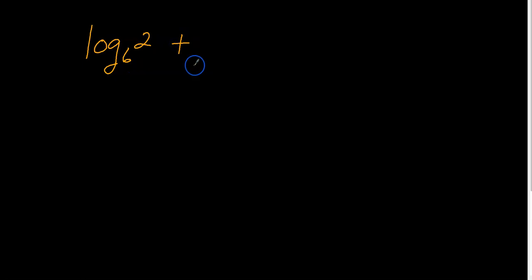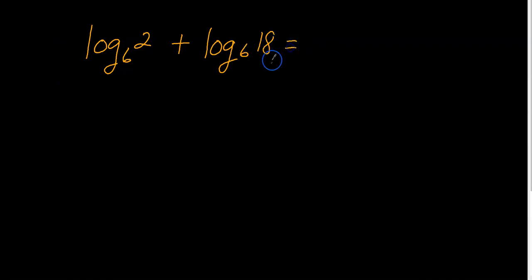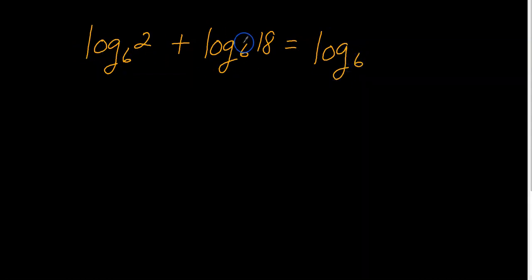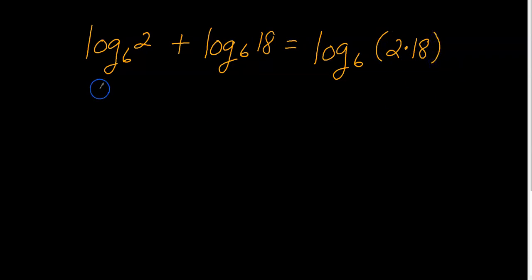The first example is log base 6 of 2 plus log base 6 of 18. I want to simplify this and rewrite it as one logarithm. Based on the first property, since they're both log base 6, I take the log base 6 and write it just once. Remember, the addition turns into multiplication, so I take this 2 and multiply it by the 18, giving log base 6 of 2 times 18.